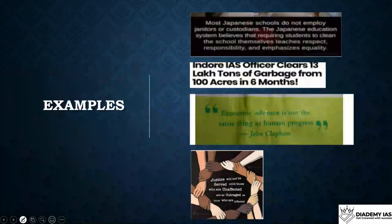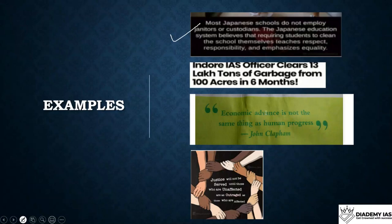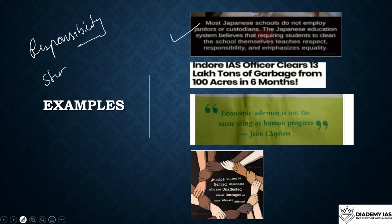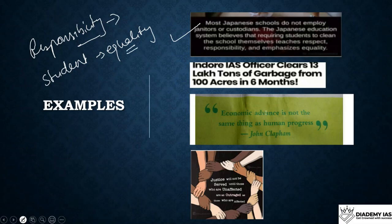Here are some examples I personally collected from newspapers and online reading. In Japan, students are expected to clean the school themselves because it teaches them responsibility. When every student does it, it creates equality. In India, due to the caste system, students from backward classes are sometimes made to sit on the floor — that kind of inequality is not prevalent in Japan's approach.